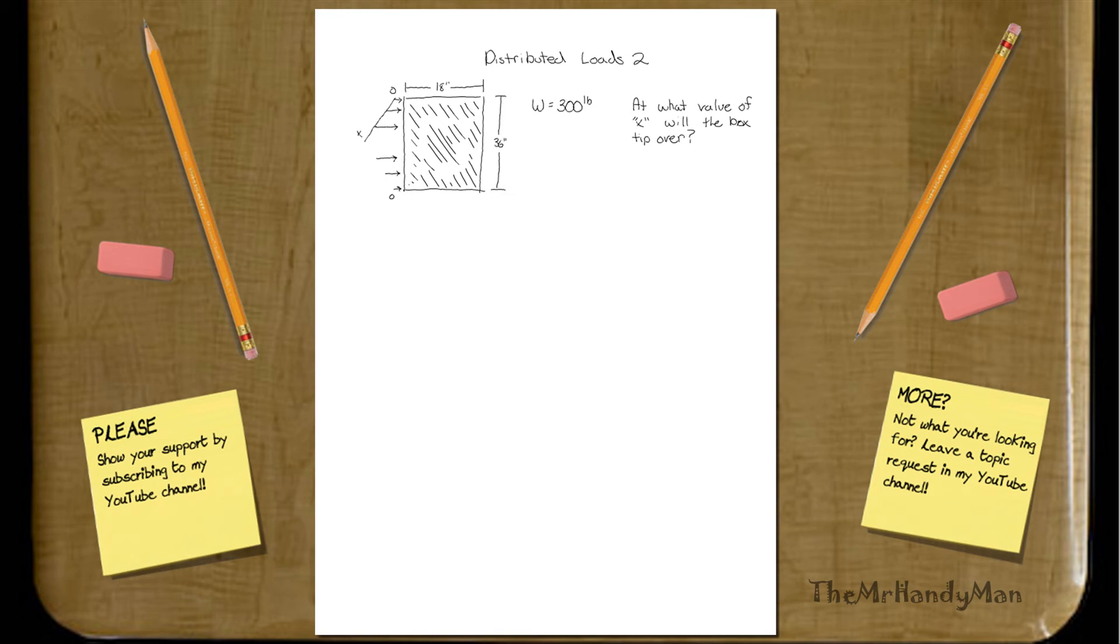We want to find out, with this point-like force distributed load on the left side of the box, how much does X have to be, the peak of those loads, that it would create enough moment about what I'm going to call a tipping point right here, such that it would cause the whole box to tip over.